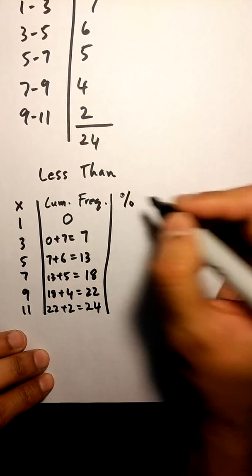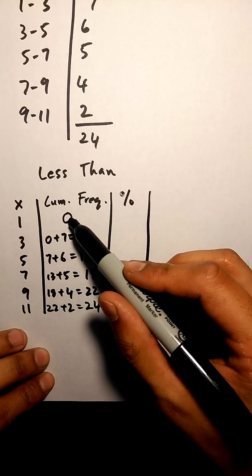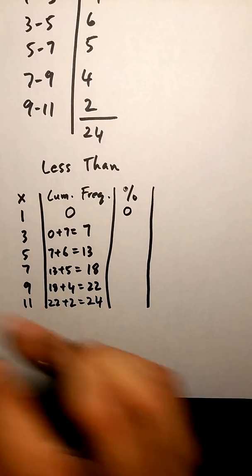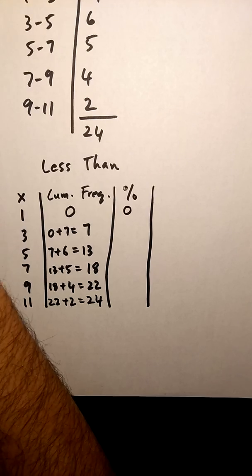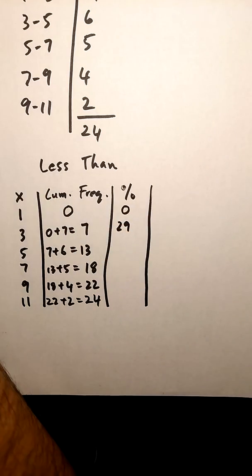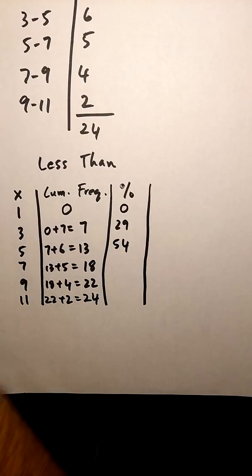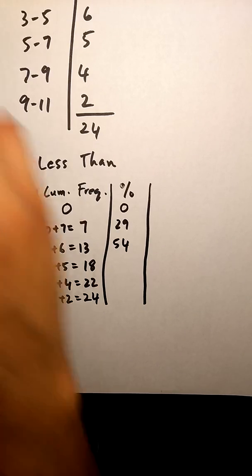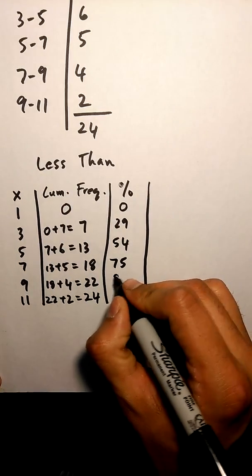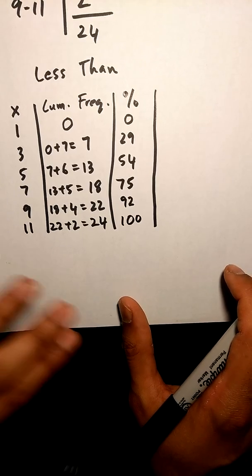The last thing you're going to do is your percentage column. Remember how we calculated them: we want to take each number, divide it by the total, and multiply that by 100. So 0 divided by 24 times 100 is 0. 7 divided by 24 times 100 is 29%. 13 divided by 24 times 100 is 54%. Then we have 75%, 92%, and 100%. So that's our less than table.